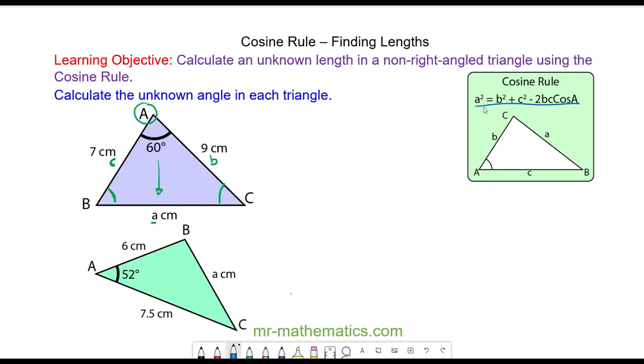So we can use this formula by substituting any unknown values. So we have a squared is equal to b squared plus c squared minus 2bc cos A. a is this length here.